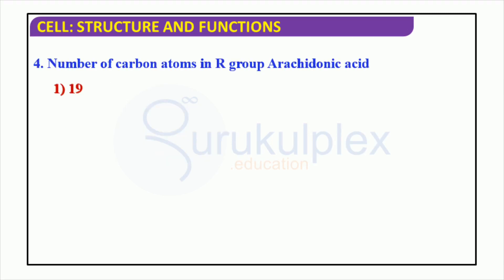The R group in arachidonic acid comprises 20 carbon atoms, making it a great source of energy for the human body. It also consists of four essential atoms — hydrogen, oxygen, carbon, and nitrogen — that are vital for the functioning and structure of biological molecules.